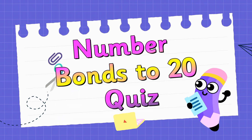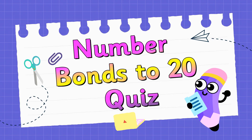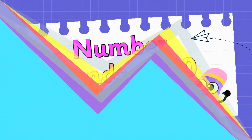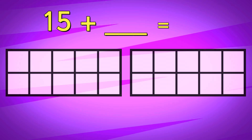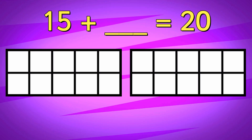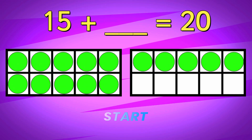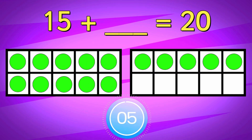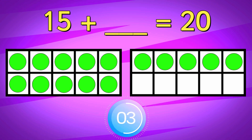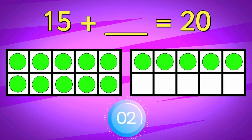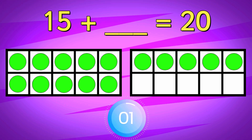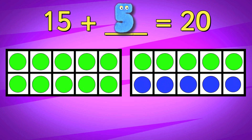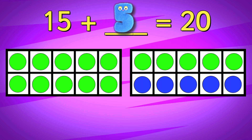Let's play a number bonds to 20 quiz. 15 add something equals 20. The answer is 5.